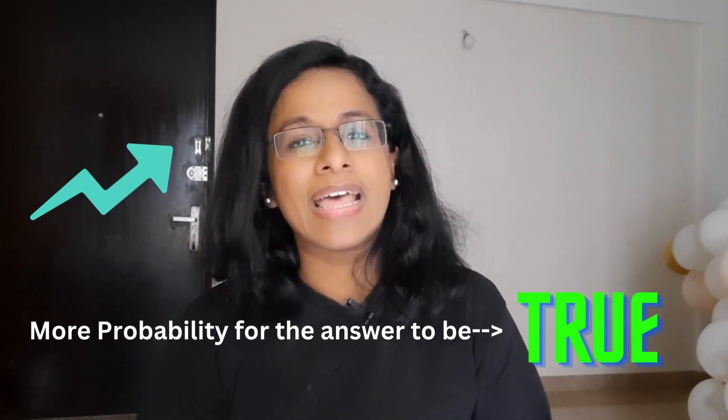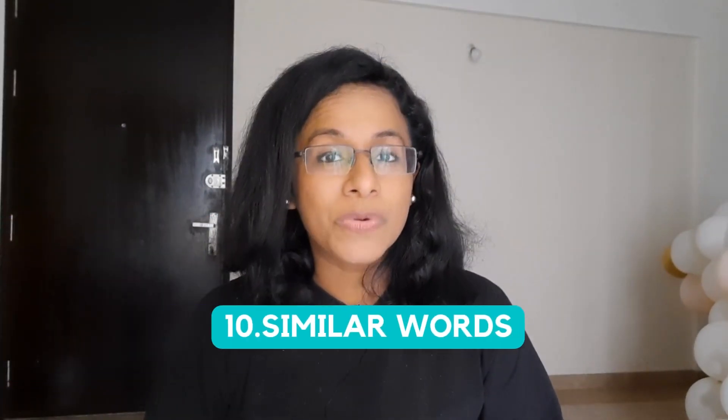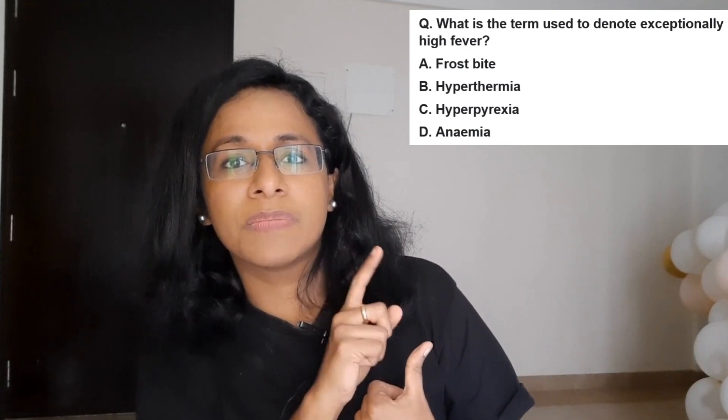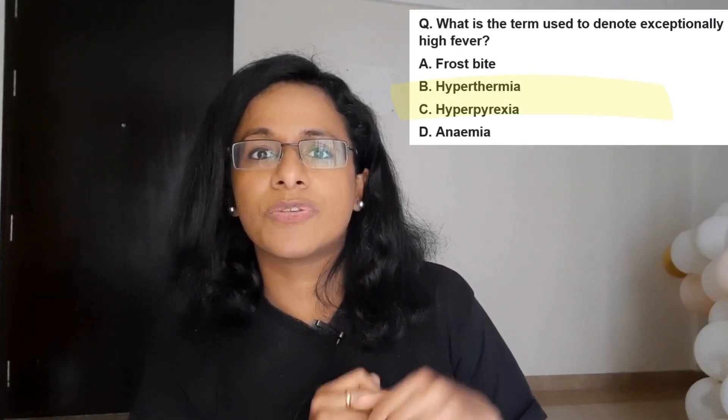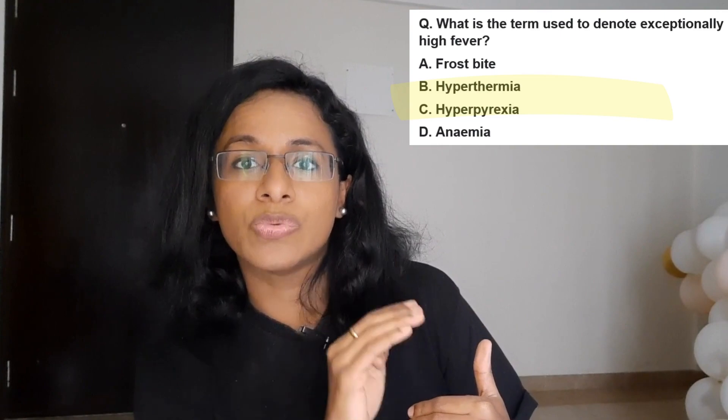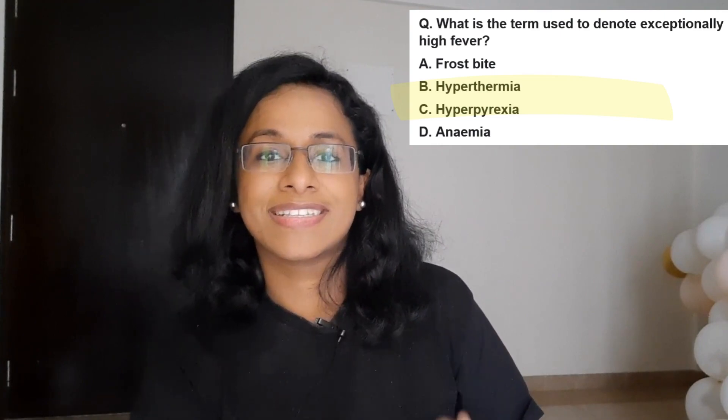Next is true or false: in true/false questions there is more probability for the answer to be true than false. Next is similar words: in a question with four options, if two of the options have similar words, the answer lies between those two options, as shown in this example question.